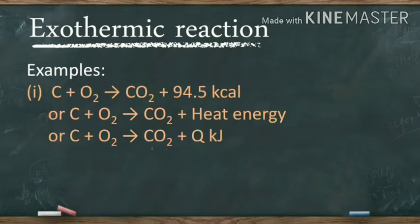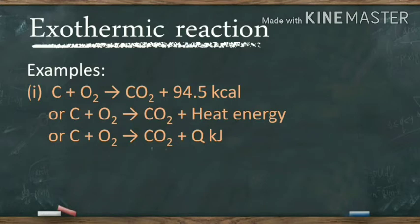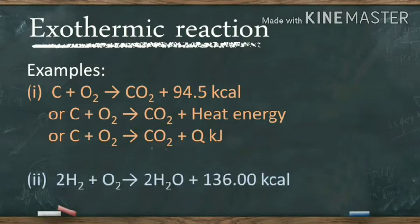For example, when carbon reacts with oxygen, 94.5 kcal of heat is evolved. So we can write: C + O2 → CO2 + 94.5 kcal, or simply C + O2 → CO2 + Q kJ, where Q represents the amount of heat evolved. The formation of water from hydrogen and oxygen is also an exothermic reaction, during which 136 kcal of heat is evolved: 2H2 + O2 → 2H2O + 136 kcal.